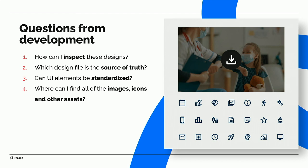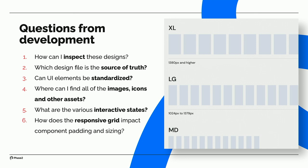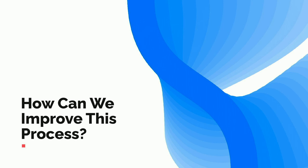What are the various interactive states? We might have designs that show active menu drop-downs and other states on primary components, but subtle animations like a button hover or focus state aren't documented anywhere, leaving developers to assume what those treatments might be. How does a responsive grid impact component padding and sizing? There are lots of edge cases with devices. At the end of the day, the designer ends up spending a lot of time working with developers to hand off everything. Everyone's frustrated — how can we improve this process?